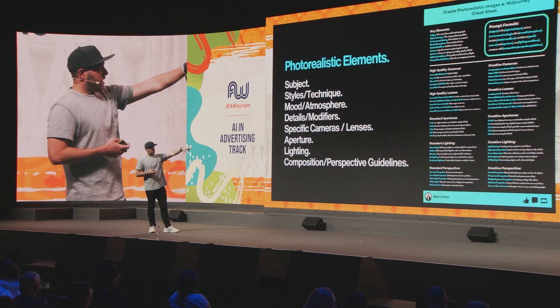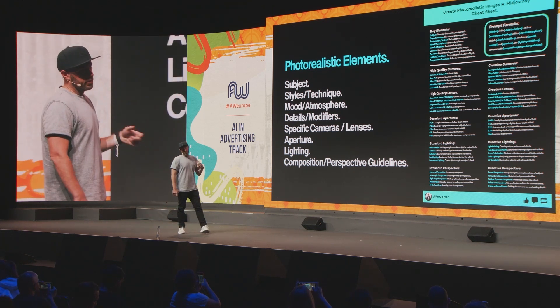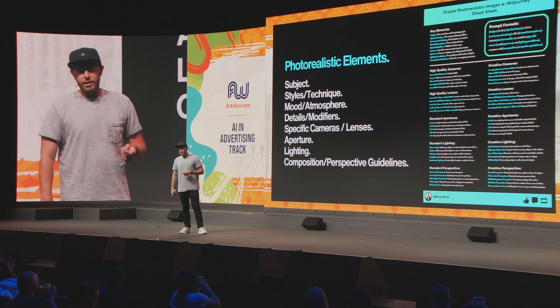On the left you'll see a little cheat sheet I left for you. Photorealistic elements are the things we want to talk about. If you were a teacher teaching a class on photography, this is what you'd teach your students. You want things like the subject, style and technique — which could be landscape, portrait, street art. Mood and atmosphere is going to shift a lot of what the output looks like. Details modifier, specific cameras and lenses — this is very important. MidJourney responds to this very well and it triggers it into a photorealistic mindset. Without it, it'll default to that AI look. Apertures, lighting, composition, perspective guidelines.